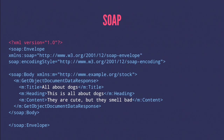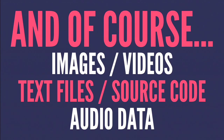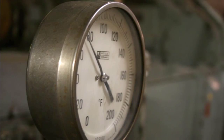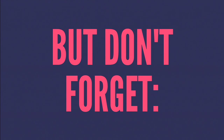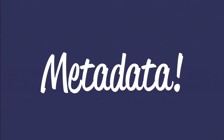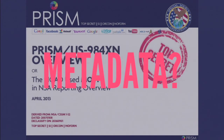This is most of the data we think about on the internet, but there's a lot of other data too: images, videos, source code, actual datasets you can just download and start using, audio data, and data about activity on the internet - like how long it took to get a response from a server, or how many network hops you had to make. And then of course there is metadata, which is everyone's favorite right now - though I'm not talking about that particular metadata.